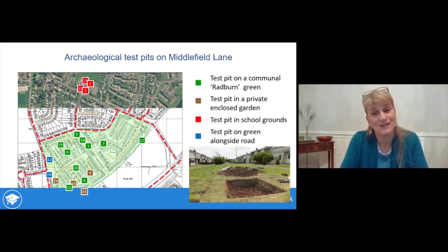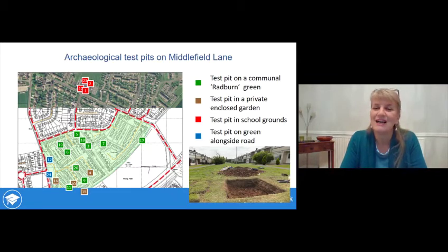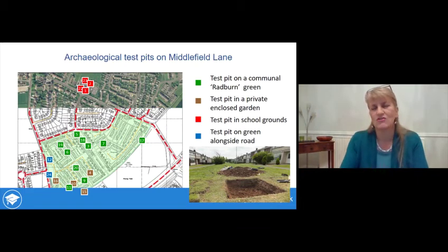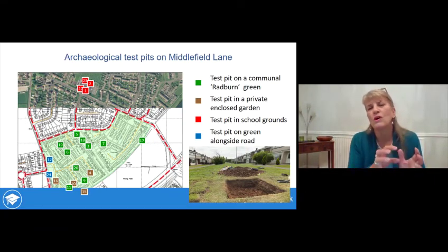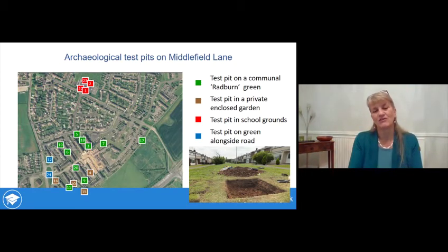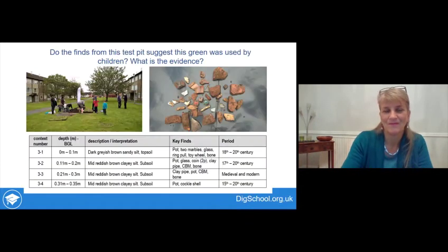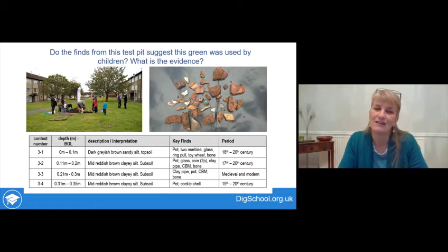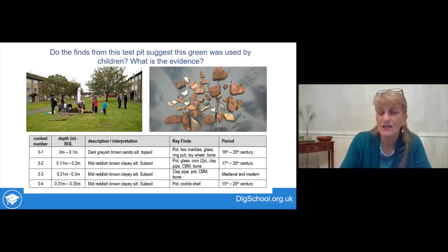Lots of test pits were dug across the estate. Around half were on Radburn greens — coloured green. Some were in enclosed back gardens — coloured brown. Others were in the school playground — coloured red, outside the pedestrianized area. A couple were on grassy areas not pedestrianized, close to roads. You can see how those test pits sit over the Radburn greens in the aerial photograph. Now look at the picture of the finds from one test pit and note down whether any suggest the green was used by children, what that evidence is, and what children might have been doing there.